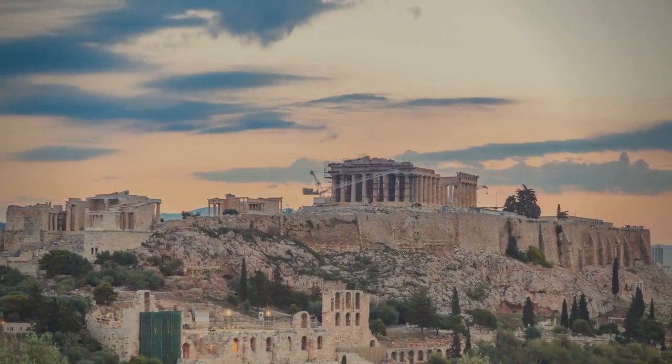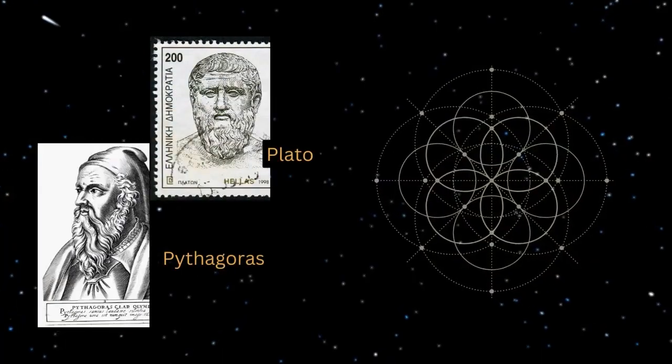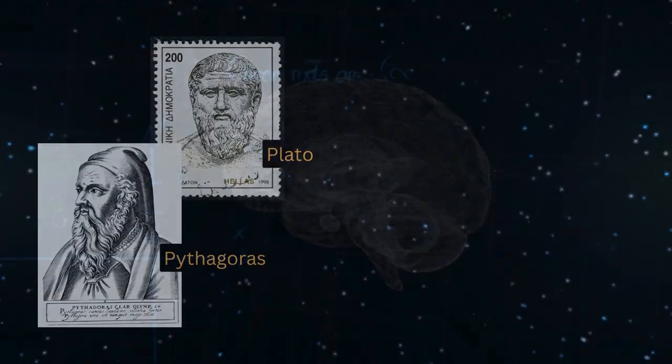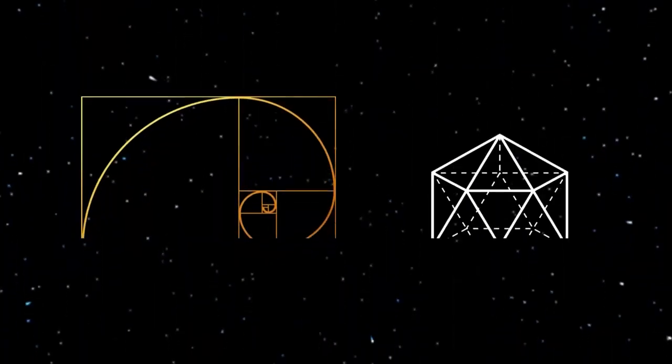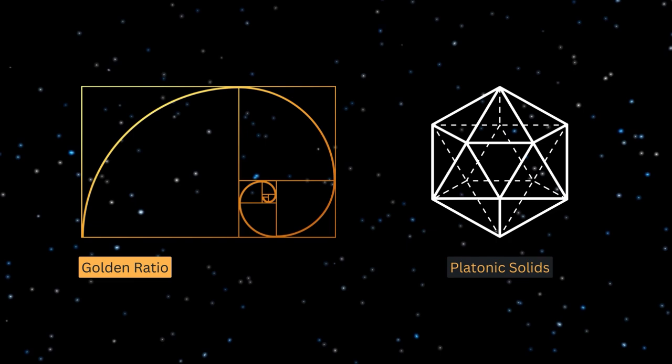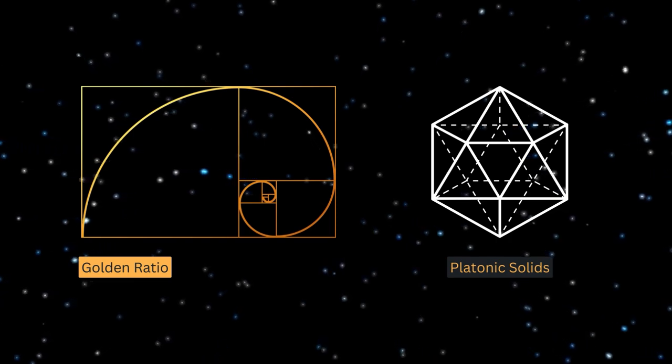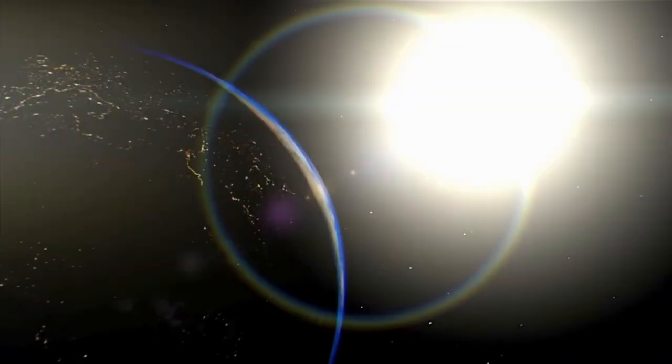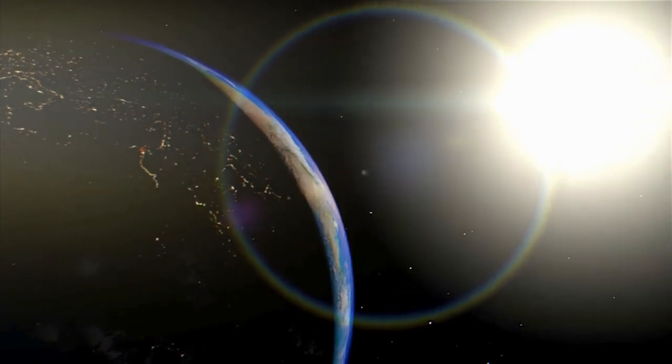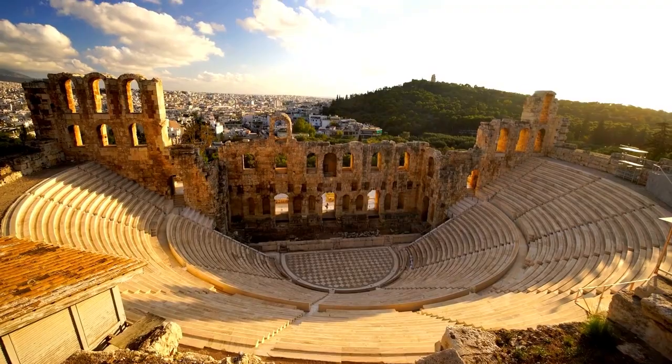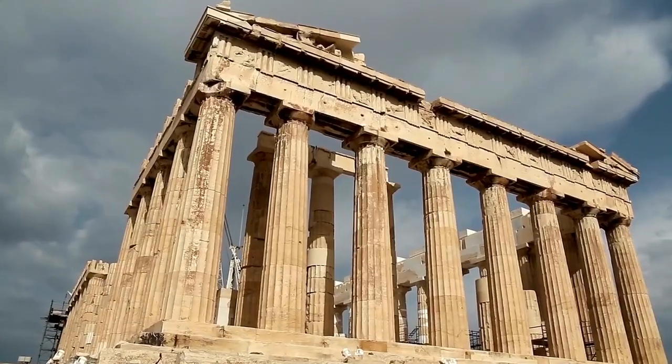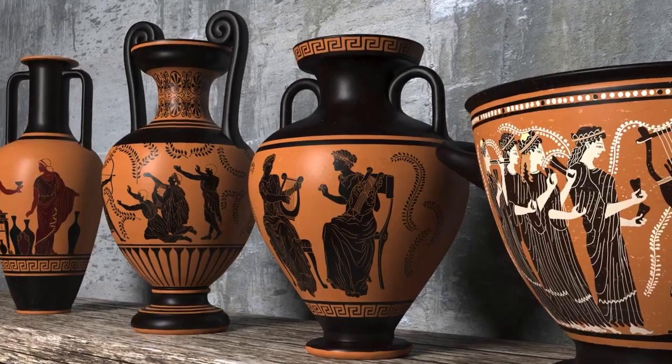In ancient Greece, philosophers like Pythagoras and Plato explored sacred geometry in both a mathematical and metaphysical context. This gave rise to concepts like the golden ratio and platonic solids, which they believed were foundational to the structure of the universe. The Greeks integrated these geometric principles into their temples and art, which illustrates how profoundly they revered these shapes and ratios.